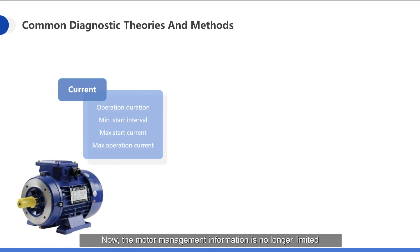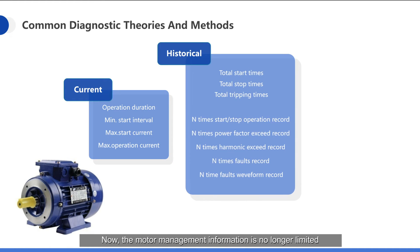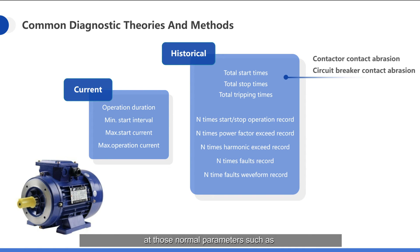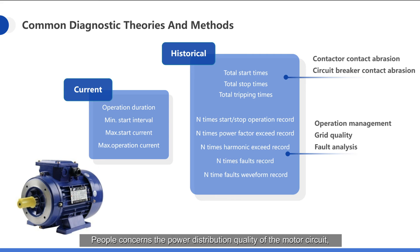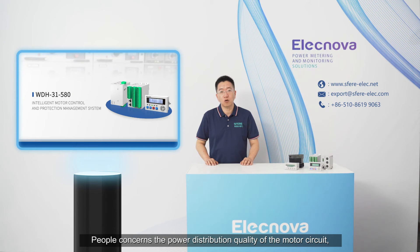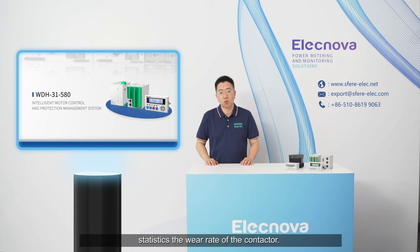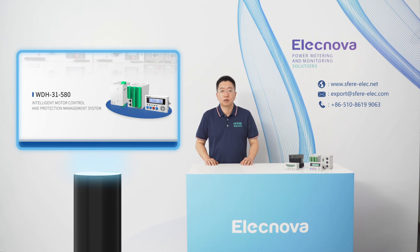Now, the motor management information is no longer limited to normal parameters such as start/stop status, voltage, current, and power. People are concerned with the power distribution quality of the motor circuit, current and voltage waveform at fault, and statistics on the wear rate of the contactor. This data can be acquired by the motor controller.